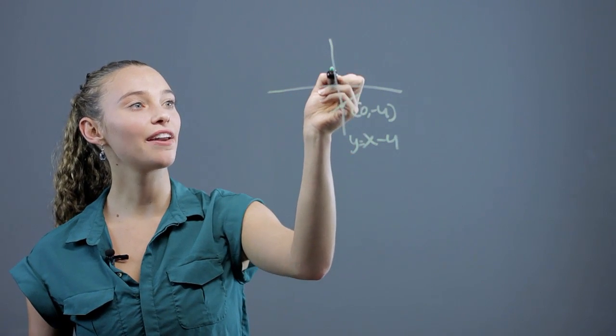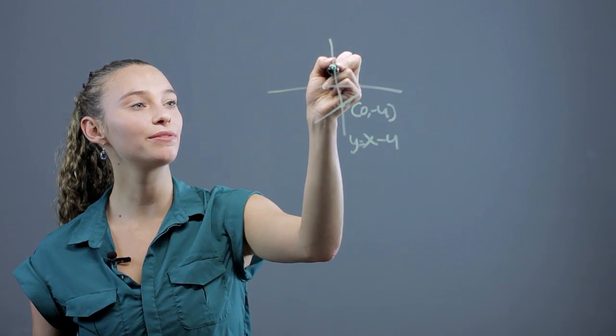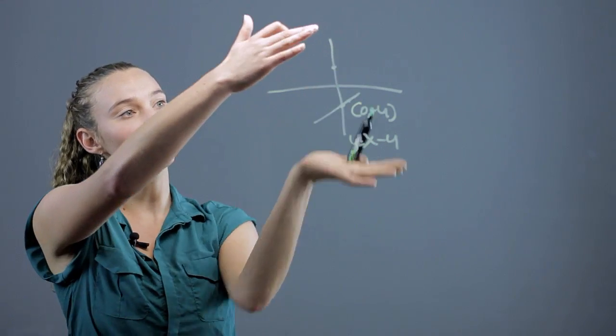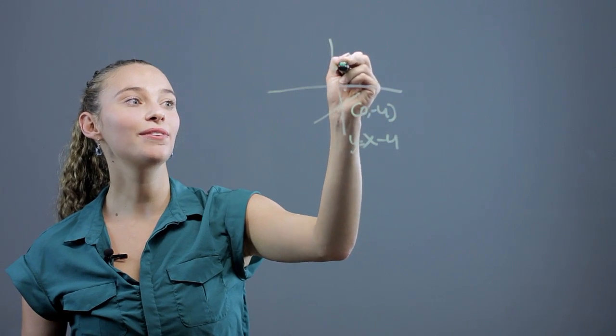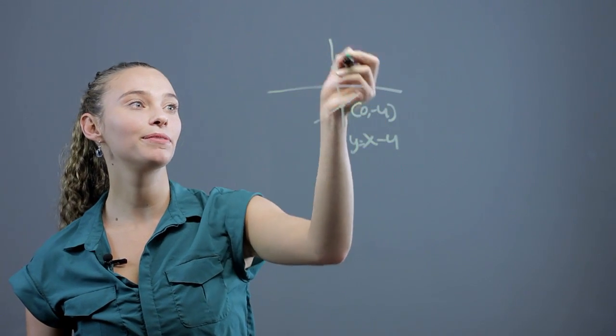If we're going to translate that over the x-axis we're going to fold it. Think of folding it and it's going to instead intersect at 4 and it's going to have the same slope.